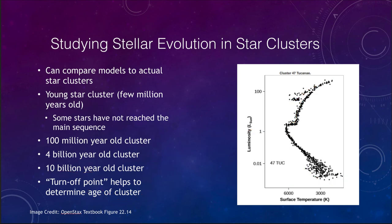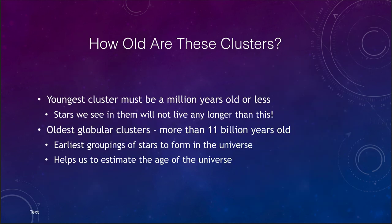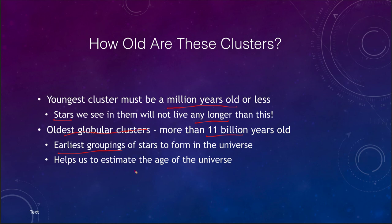The youngest clusters must be a million years old or less, because the stars we see in them would not survive any longer. The oldest globular clusters we find are more than 11 billion years old — some of the earliest groupings to form in the history of the universe. This gives us an estimate of the age of the universe itself, because the universe cannot be younger than the oldest stars in it; stars could not have formed before the universe existed.